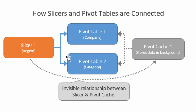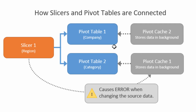What we're effectively doing when we change that source data and get the error is creating another pivot cache. Pivot table 1 will now have source data that includes the new rows, creating a new pivot cache, while pivot table 2 still uses the old pivot cache. The slicer cannot be connected to both pivot tables when they use different caches — this breaks the relationship and causes the error.